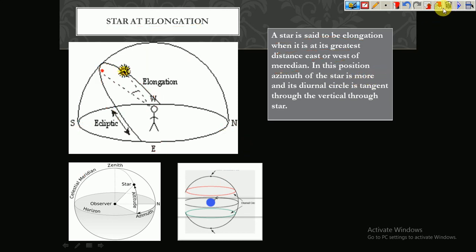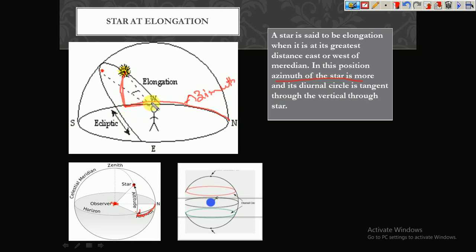In this position, the azimuth of the star is more. Let me explain what azimuth is — we also studied this in Part 1 of the video. If this is the observer and here is the star, from this point the vertical angle is called altitude, and from the north this angle is called azimuth. In this position the azimuth of the star is more.